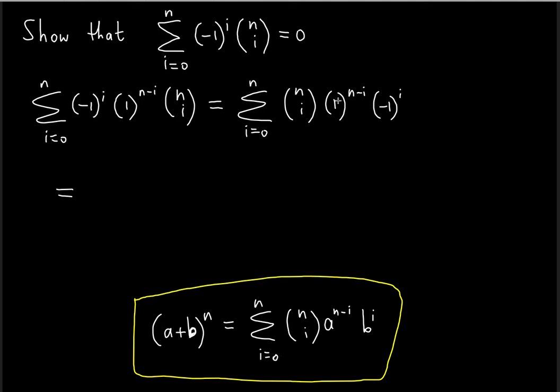As a result, what is this going to be? Notice n choose i is the same, but a is equal to 1 here because a is raised to the n minus i in the formula and 1 is raised to the n minus i in the formula. So we're going to write, instead of a, we're going to write 1 plus. Now what is the b? B raised to the i. Negative 1 is raised to the i, so we're going to substitute the b with negative 1, raised to the nth power.